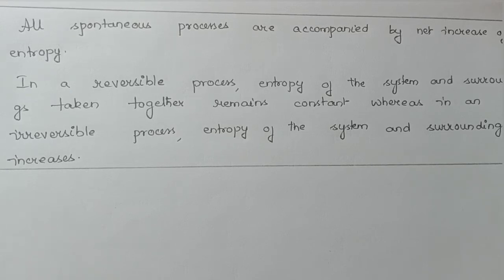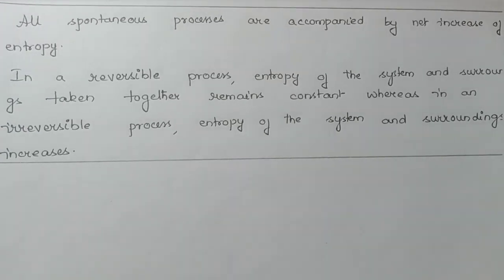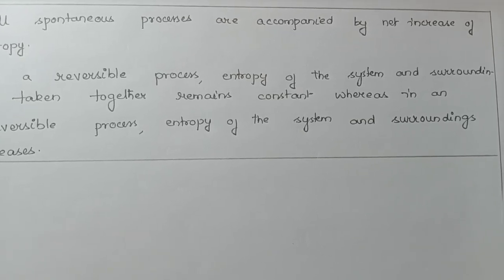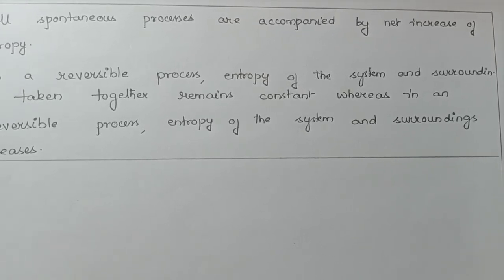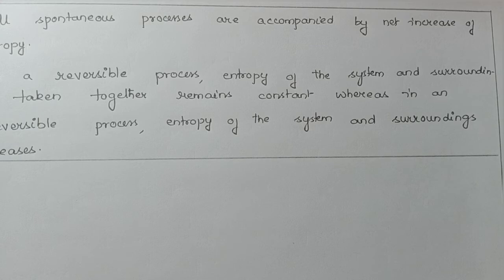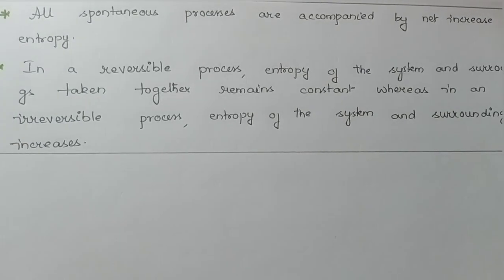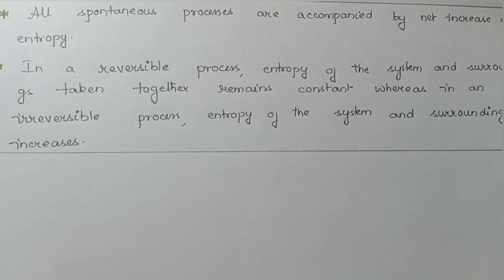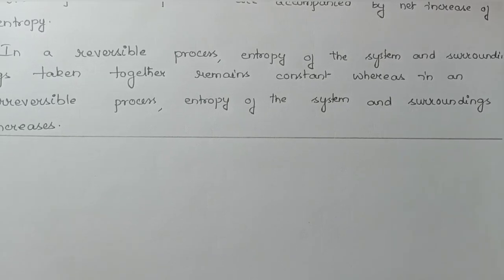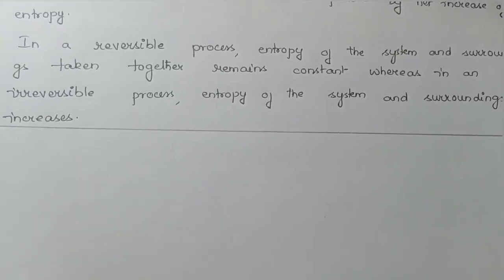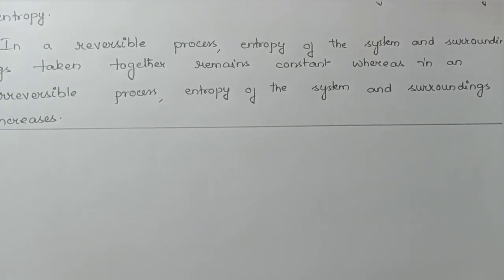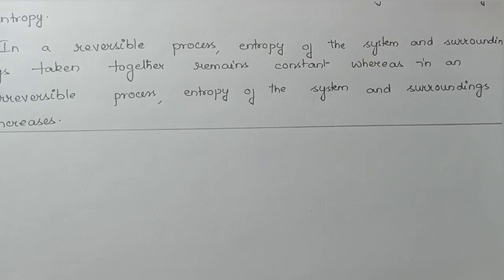One more statement: in a reversible process, the entropy of the system and surroundings combined together remains constant. In an irreversible process, the entropy of the system and surroundings increases. So in a reversible process entropy of system and surroundings taken together remains constant, whereas in an irreversible process it increases. These are the various statements of the second law of thermodynamics.